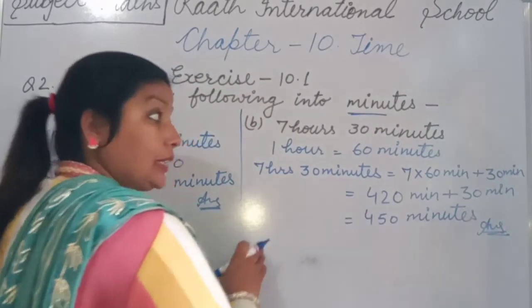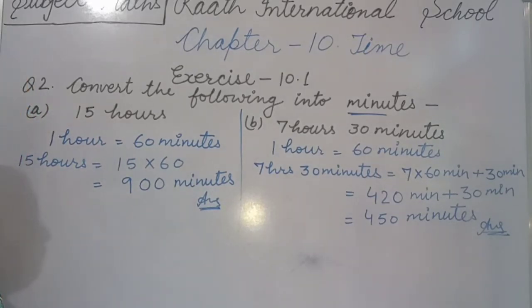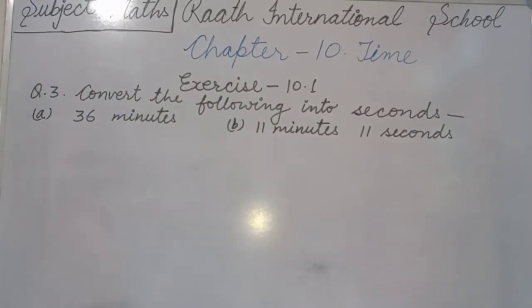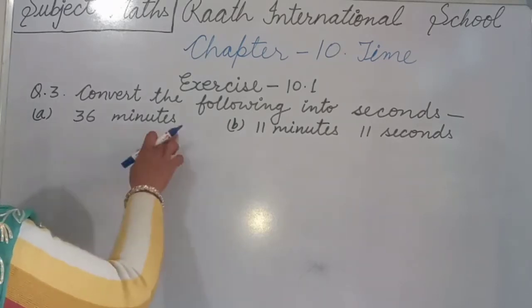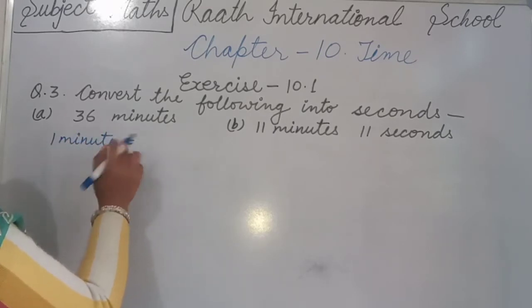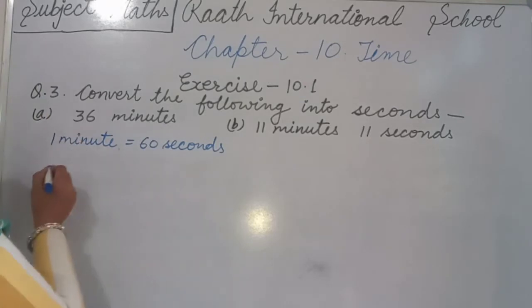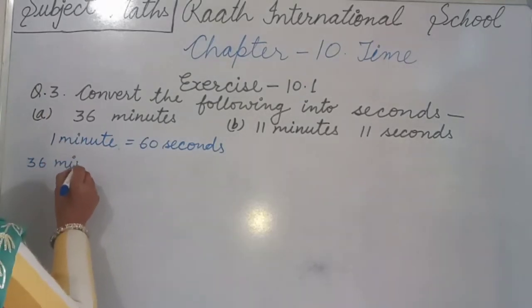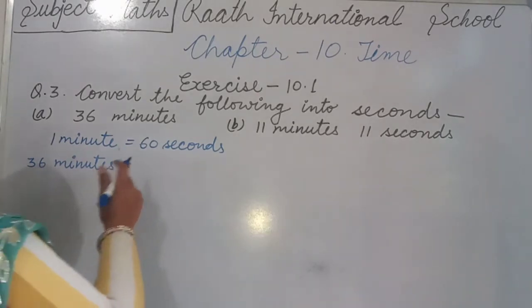C and D parts you will do yourself, same as B. Now Question 3: Convert the following into seconds. Minutes are given and we convert into seconds — smaller unit, so we multiply. 1 minute equals 60 seconds. Part A: 36 minutes. So 36 multiplied by 60.